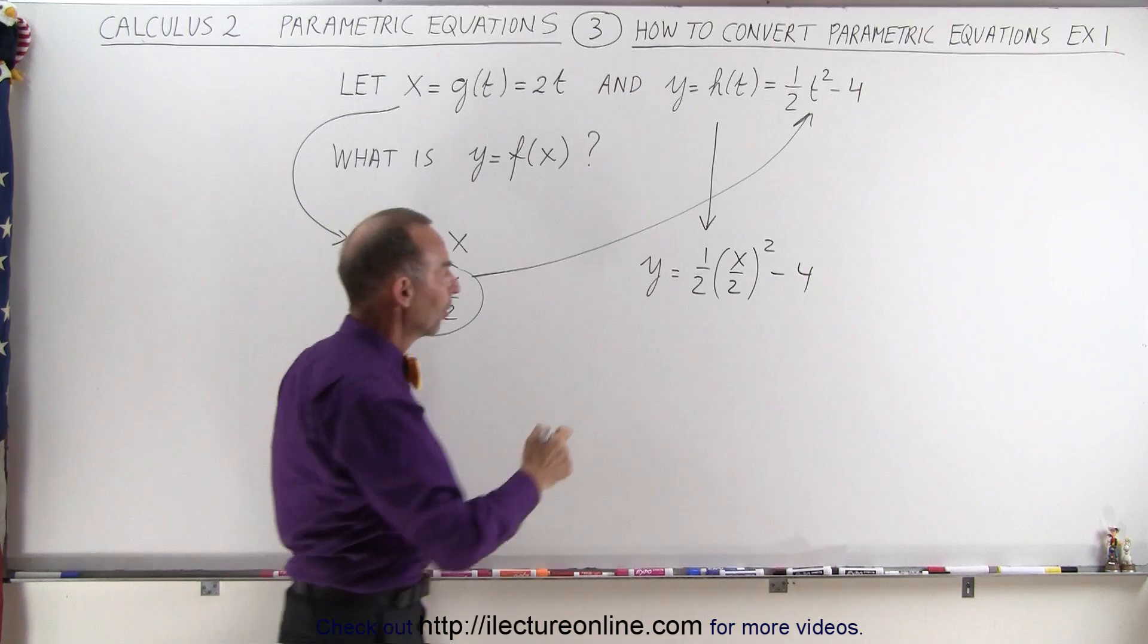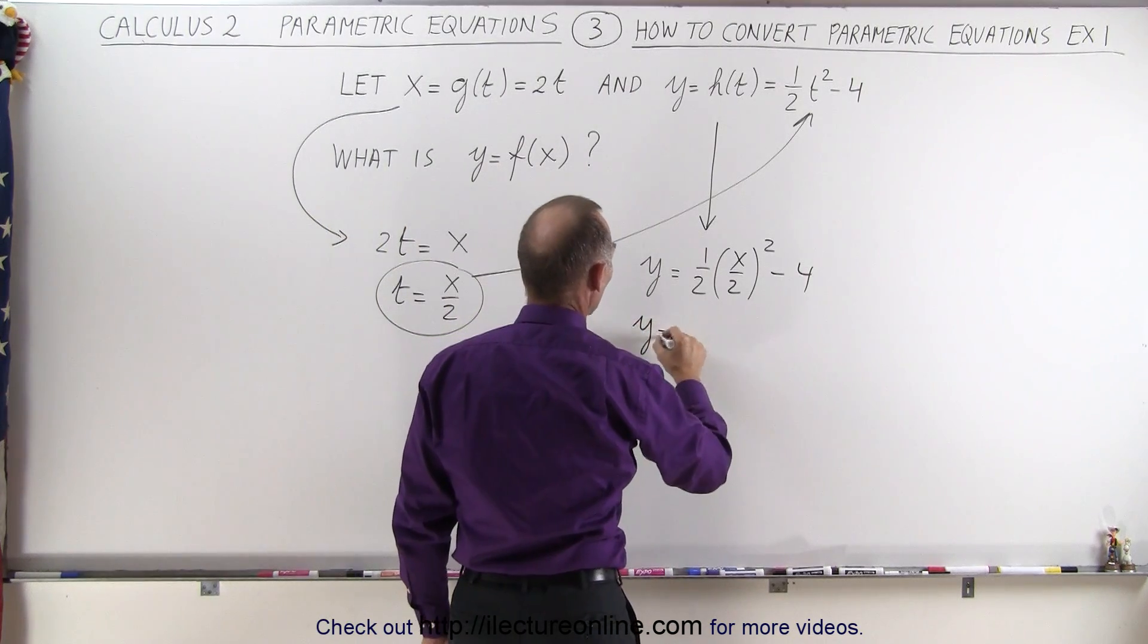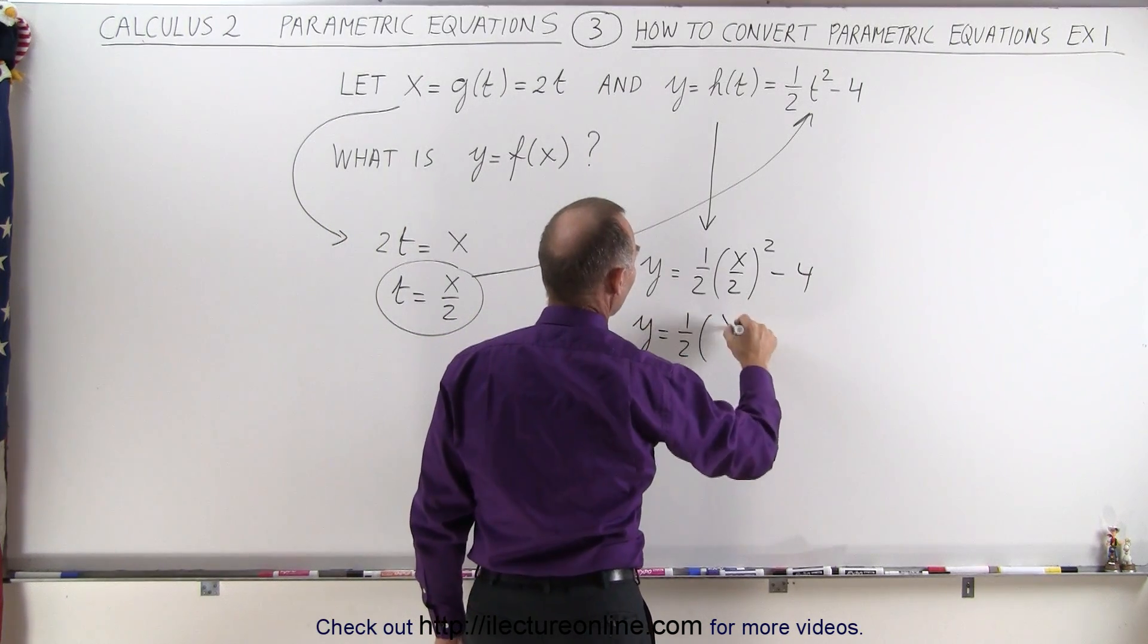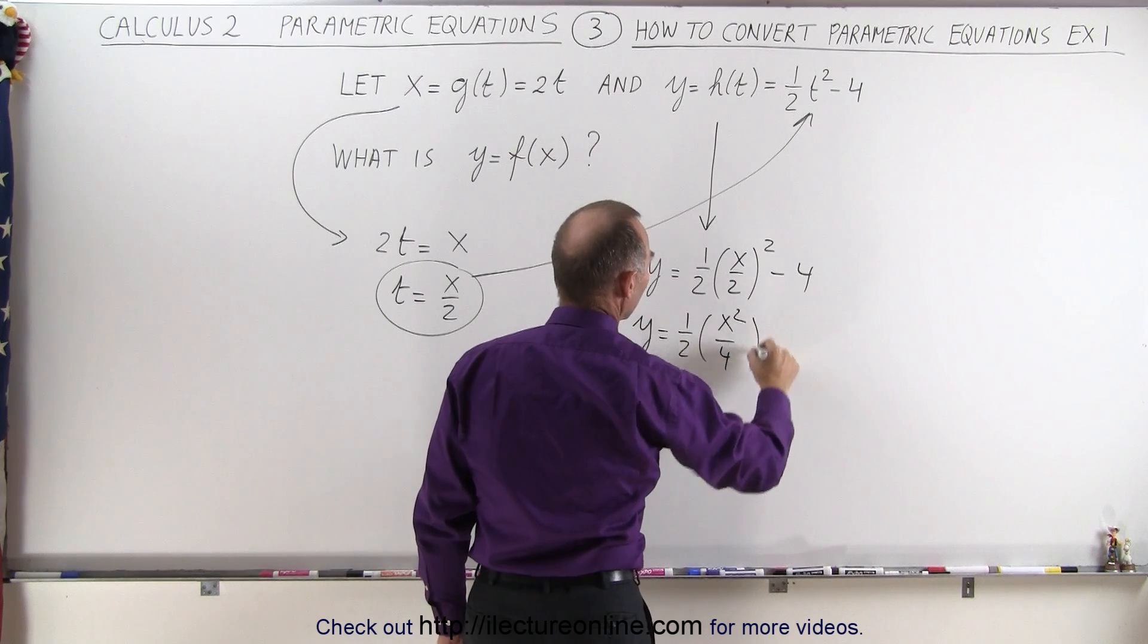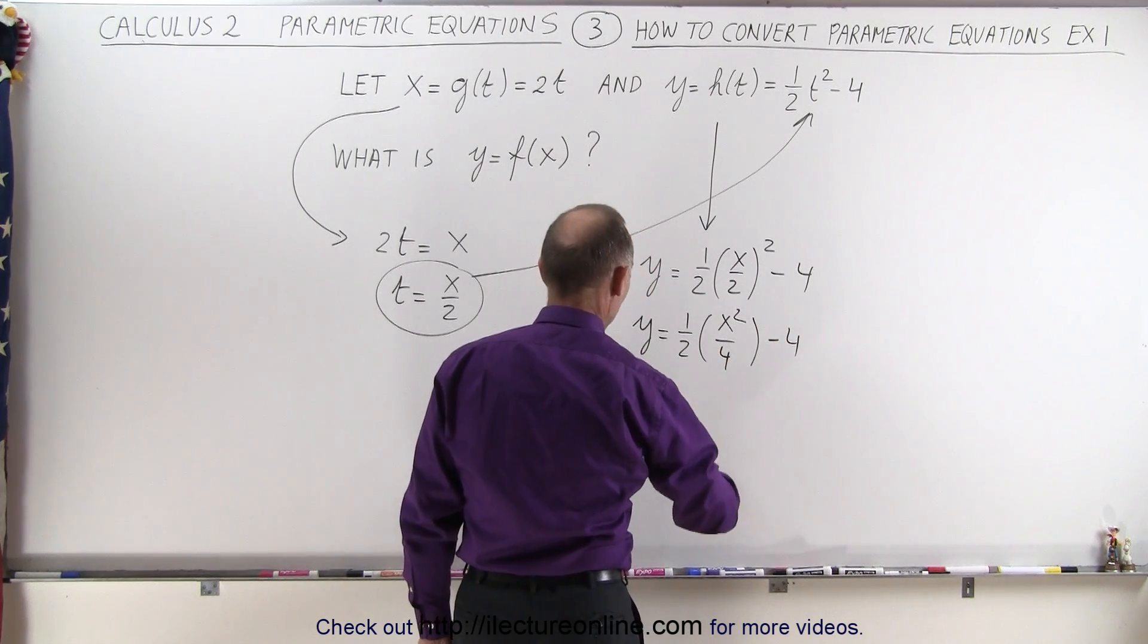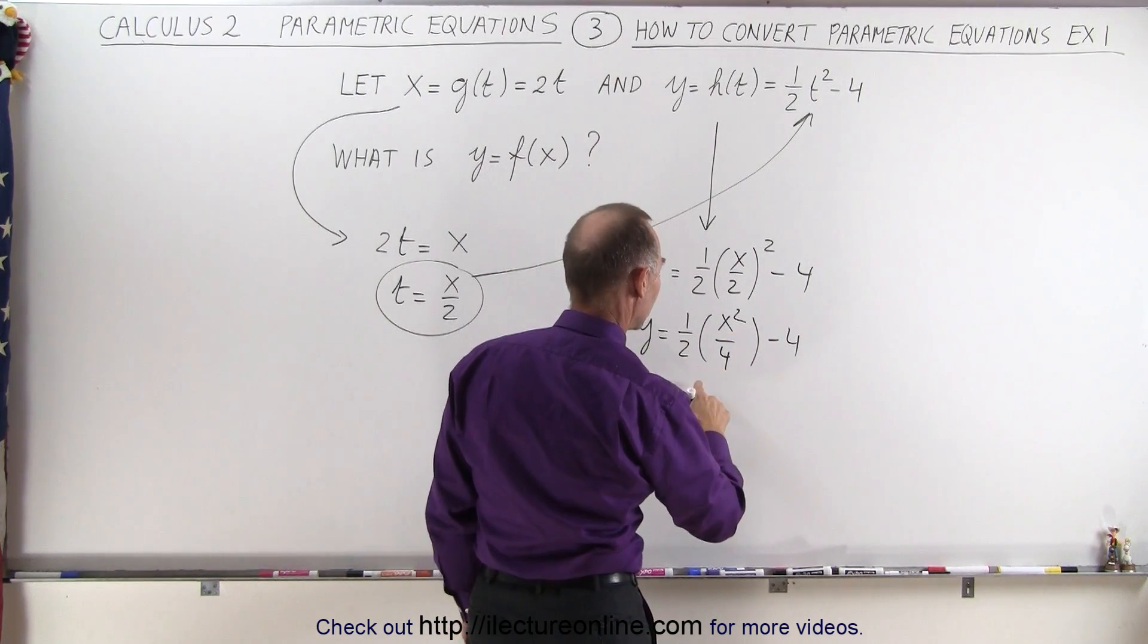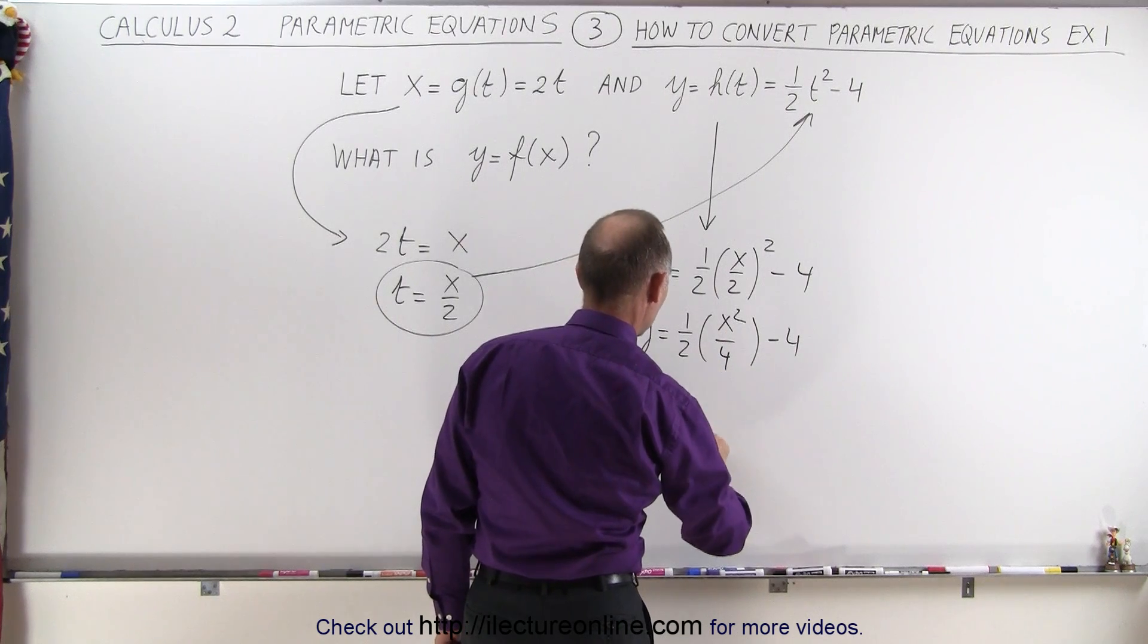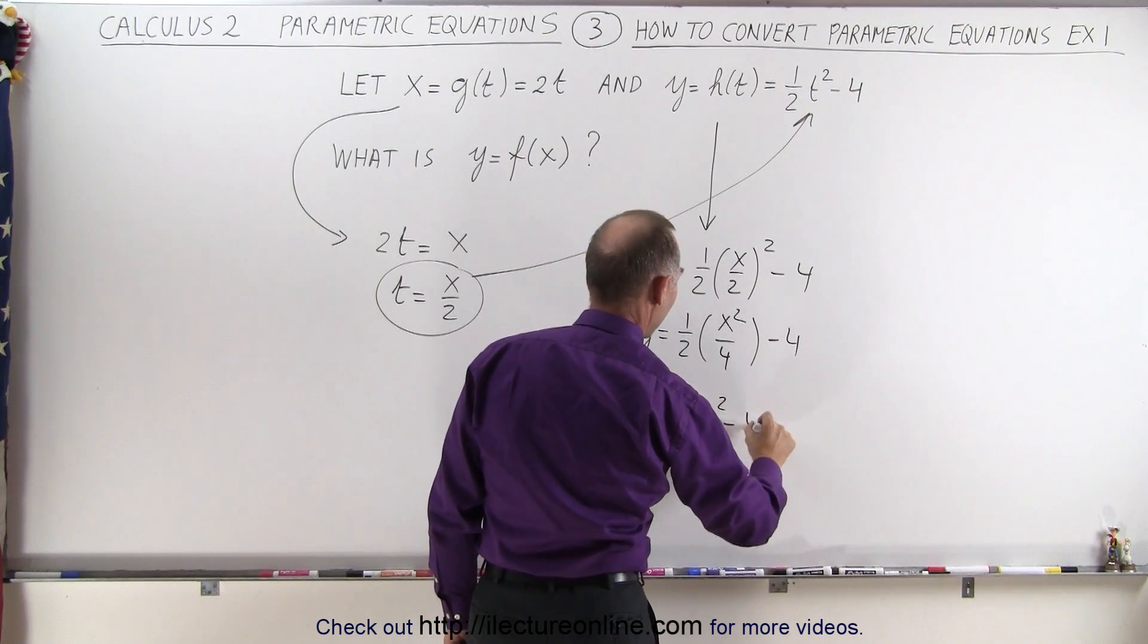So this can then be simplified as y equals one-half times x squared over 4 minus 4, or y is equal to, let's see here, that would be one-eighth x squared minus 4.